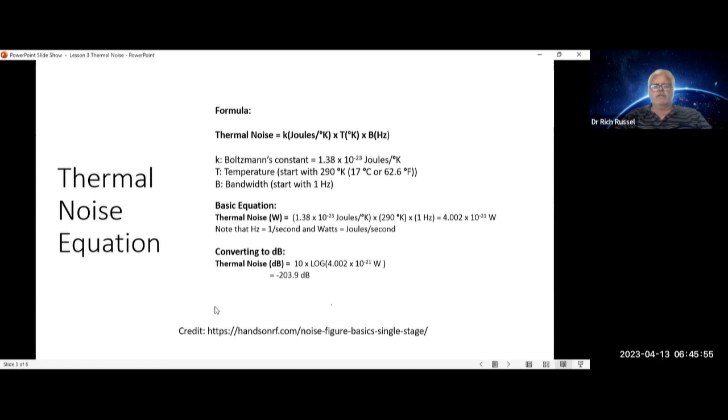Calculate thermal noise. Thermal noise is equal to the Boltzmann's constant, which is joules over degrees Kelvin, times temperature in Kelvin, times your bandwidth being measured in Hertz.